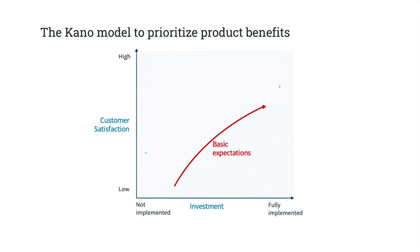You need to invest in meeting basic expectations. However, if you only focus on meeting basic expectations, even if you meet all of them, you'll eventually reach a limit of customer satisfaction that you cannot improve beyond. The second category is performance. The more you invest in performers, the more customer satisfaction increases. The higher their performance, the greater the satisfaction of the customer — that's why they're called performers.